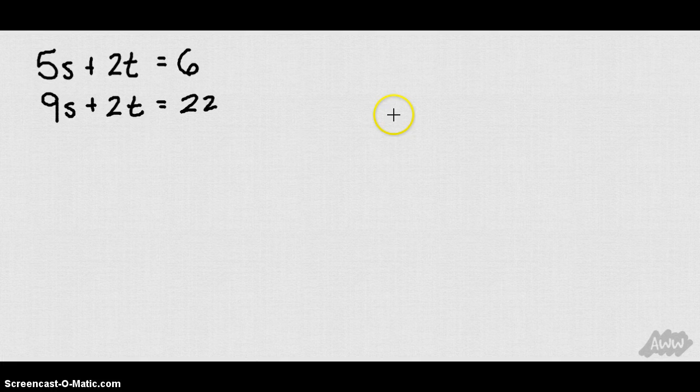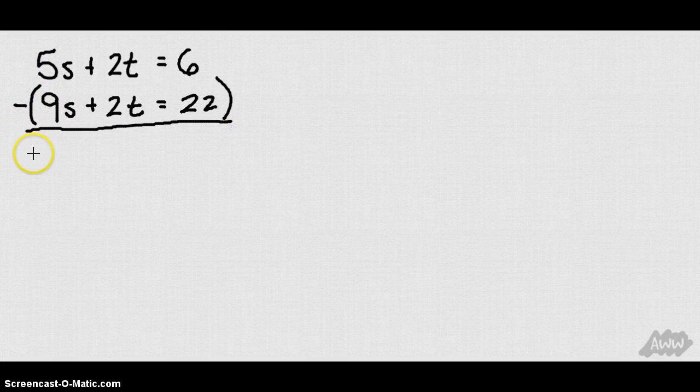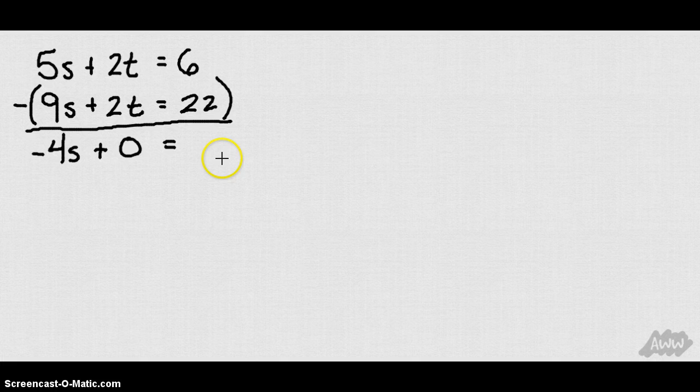So in the previous examples we added to eliminate a variable. Now we're going to subtract to eliminate a variable. Notice this time my 5s and 9s are not going to cancel. But my 2t and 2t can cancel if I subtract these two equations. Because what's going to happen is I get 5s minus 9s, which is negative 4s. But I get 2t minus 2t. It's going to give me 0. Then I finally have 6 minus 22. That's going to give me a negative 16.